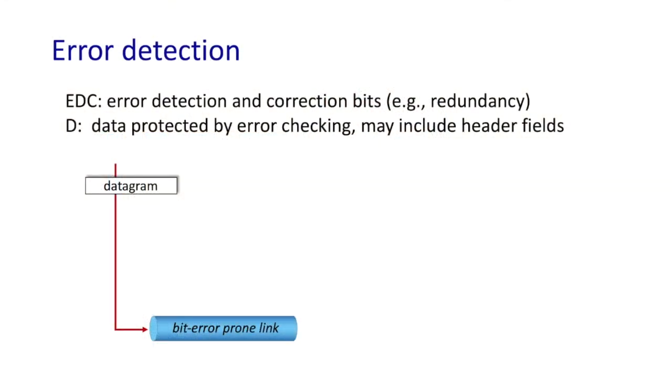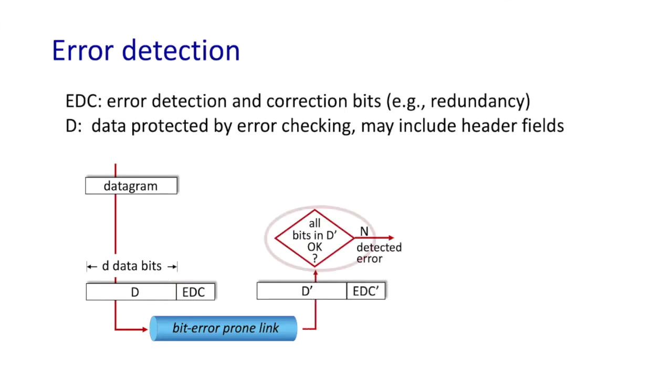Here's the error detection scenario that we studied earlier, now in a link layer context. The network layer will pass a datagram down to the link layer for transmission. The sending side link will then take the datagram, add some header fields to create a frame with d bits here, and then is going to compute and append error detection and correction bits, EDC here. The frame's then transmitted over a link that can introduce bit errors. The receiver then performs a check to see if the bit frames have been corrupted. If the frame passes the check, it'll extract the datagram and pass it up to the network layer.